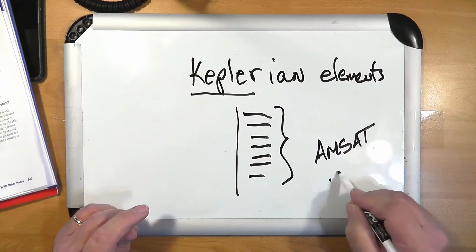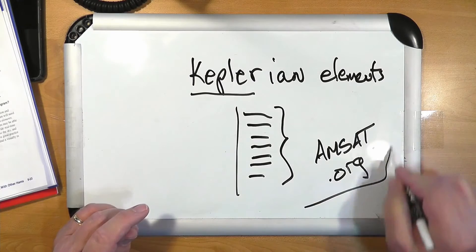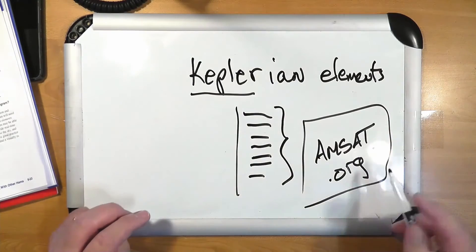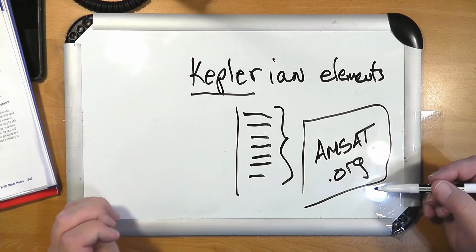What's easier is just going to the AMSAT.org website, looking up the satellite, and you put in your location. It will tell you when the next several passes are, where you need to be, where you need to point your antenna, and so on. Now, in amateur practice, we point our antennas based on where the satellite is supposed to be based on its Keplerian elements, rather than try to track it.